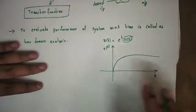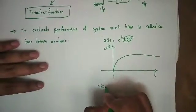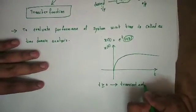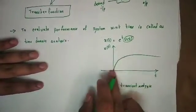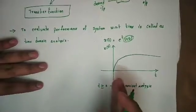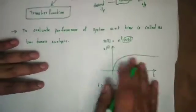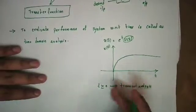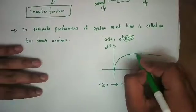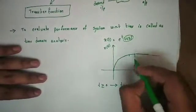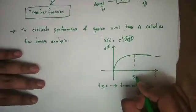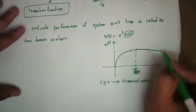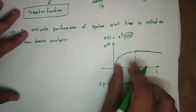Now, transient analysis can be done for t greater than or equal to 0. The e function response is the first transient analysis, for t greater than or equal to 0, up until it reaches steady state. Practical steady state can be reached by 5 time constants. In the ideal case, infinity is the steady state reached. The steady state is reached at t greater than or equal to 0.